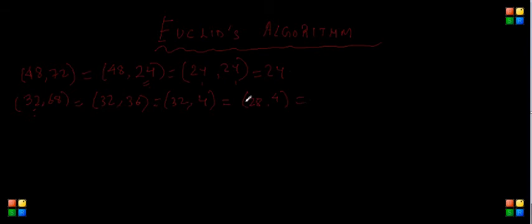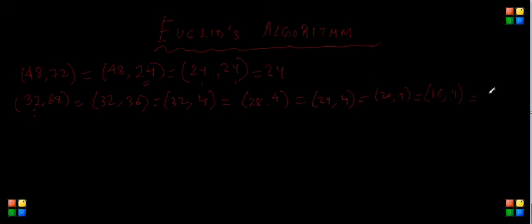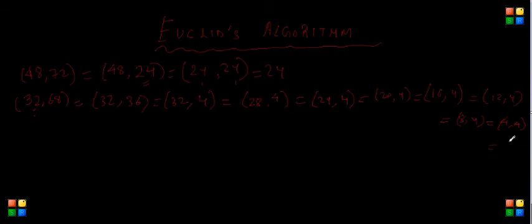This keeps repeating: 24, 4 then 20, 4 then 16, 4 then 12, 4 then 8, 4 then 4, 4. Now we terminate the process because both numbers are the same, so the greatest common divisor is 4.